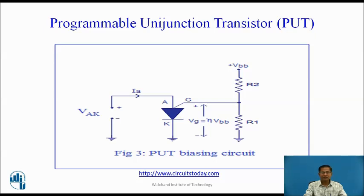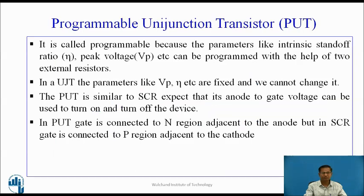PUT biasing circuit: Here, the resistive divider network R1 and R2 acts as a voltage divider network. This is used to set eta and standoff voltage and set the specific gate voltage. PUT is called programmable because the parameters like intrinsic standoff ratio eta, peak voltage Vp, can be programmed with the help of two external resistors Rb1 and Rb2. In UJT, the parameters like peak voltage and eta are fixed and we cannot change them.